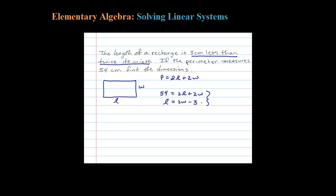You could solve it any way you want, but it looks easiest here to solve by substitution. Let's take L, which is 2W minus 3, and substitute into the first equation. So 54 equals 2 times (2W minus 3) plus 2W. The only variable left is W.